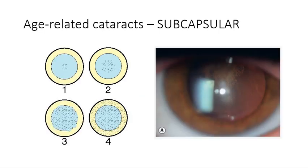Looking at the image from the previous slide according to its grading and severity, a grade 1 subcapsular cataract has just a few speckles, while a grade 2 takes up a little bit more of the lens — and I think this cataract here is probably a grade 2 in severity. A grade 3 takes up more of the space, pretty much occupying the whole area visible through the pupil. A grade 4 is even more severe, taking up the whole lens. So in this case I would say this one could be graded as a grade 2 subcapsular cataract.